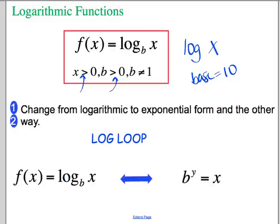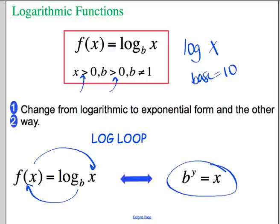The first and second objectives deal with switching between exponentials and logarithms — going back and forth between the two. I like to use what I call the log loop to help remember how to change it. If I have f of x equals log base b of x, the way the loop works is: take the base b, which will be the base of the exponent, and say b to the y equals x. That's how we can switch between the two functions.